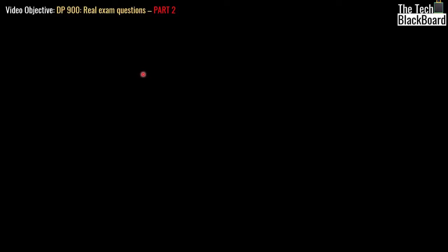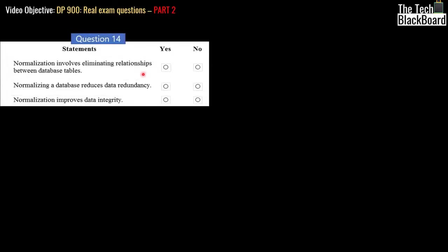In part one we looked at drag-and-drop style questions. In this part we go through yes/no or true/false questions. We covered questions 1 to 13 in part one; now we start with question 14. The first statement says normalization involves eliminating relationships between database tables. In normalization, we actually build relationships between tables in a relational database — it is the opposite of eliminating them. So this statement is definitely no.